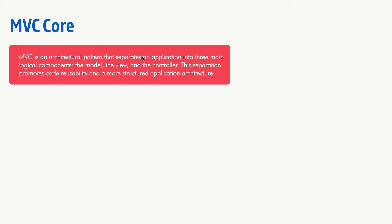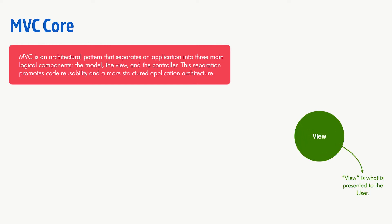MVC is a structural pattern that separates an application into three main logical components: the Model, the View, and the Controller. Any application following this pattern promotes code usability and a more structured application architecture. The View is what is actually presented to the user — you can consider the View as a GUI. Then you have the Model.